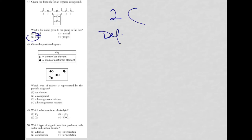For 48, you've given a particle diagram. Don't let the fancy words fool you. It's basically just symbols representing atoms, or if the atoms are touching, then you have a molecule, and you're asked which type of matter is represented by the particle diagram.